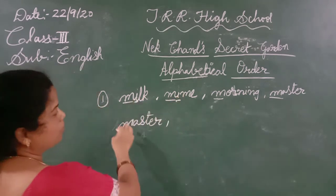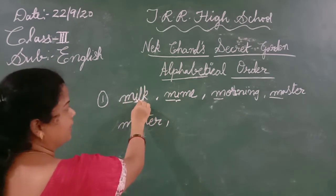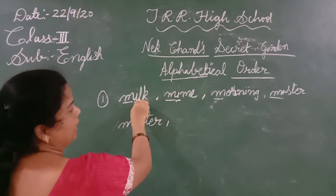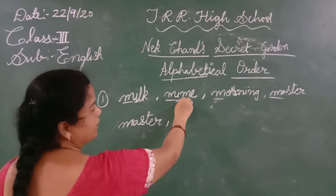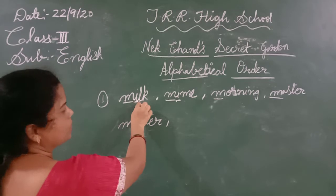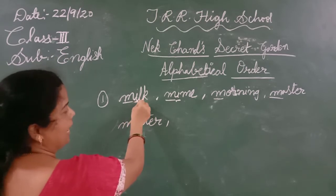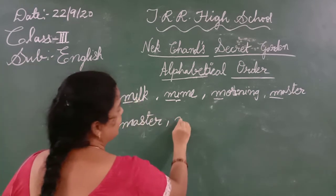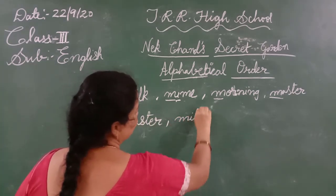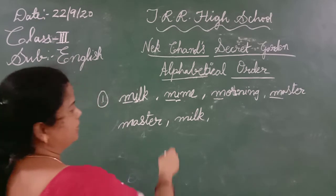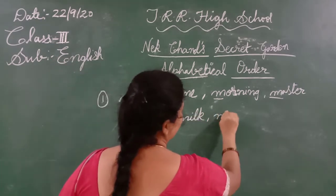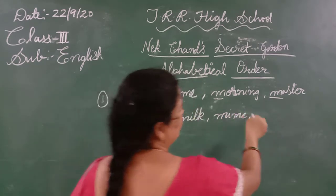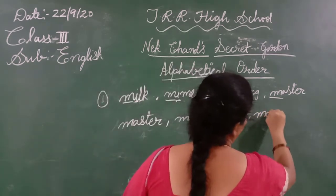So we have to move on to the third letter. Here in milk it is L, and in mine it is M. So milk comes first, as L comes before M in alphabetical order. We write milk as the second word, mine as the third, and finally morning as the last.